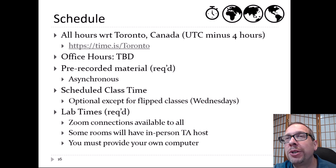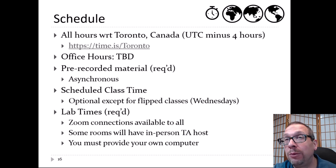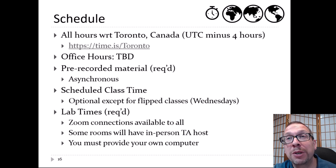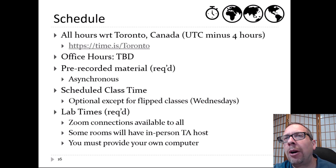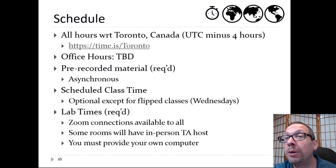Regarding the basic schedule, all times listed in this course are with respect to Toronto, Canada. A lot of the material is asynchronous and pre-recorded, giving you flexibility. We do have scheduled class times — listed for section E or F — and you're generally expected to follow the schedule for your particular section. Most classes are optional question-and-answer sessions, except for flipped classes on Wednesdays, which are in-class homework sessions. Lab times are restricted to your particular registration, with in-person and parallel Zoom sessions available. You must use your own computer equipment for the lab.